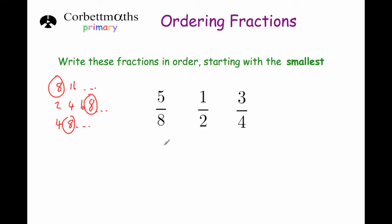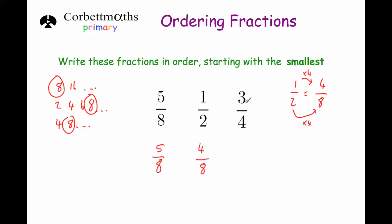5 eighths is quite nice because it's already in eighths. To get from a half to eighths, we want to get an 8 on the bottom of that fraction. We times the bottom number by 4, so we're going to times the numerator by 4 as well, and 1 times 4 equals 4. So 1 half is the same as 4 eighths. And finally 3 quarters — to convert to eighths we just double the denominator, then double the numerator, so 3 times 2 is 6. So 3 quarters is the same as 6 eighths.